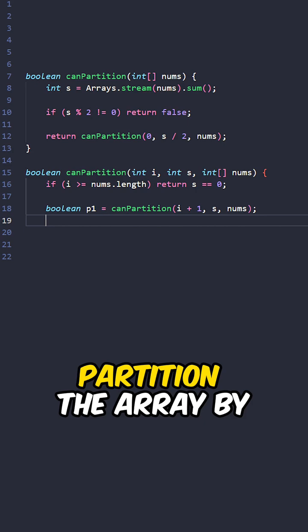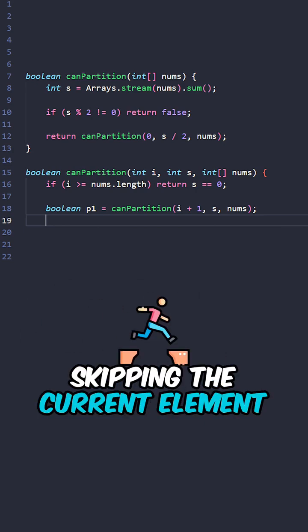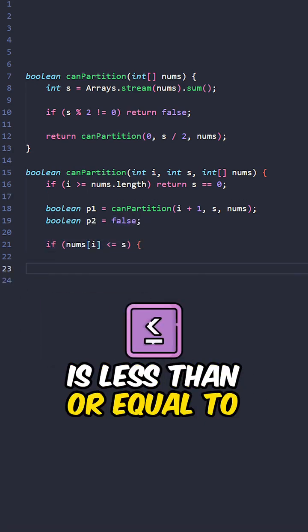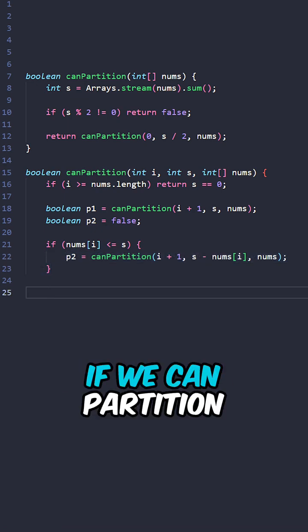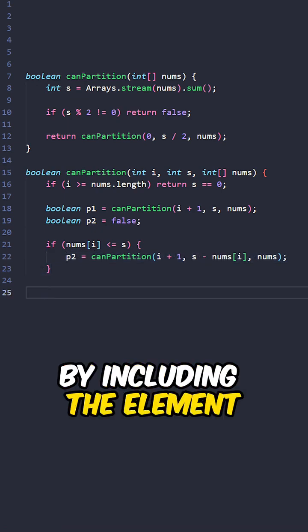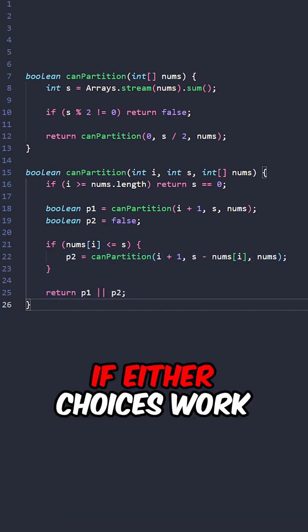Recursively check if we can partition the array by skipping the current element. If the current element is less than or equal to the sum, recursively check if we can partition by including the element. Return true if either choice works.